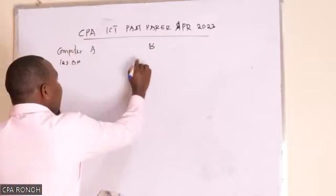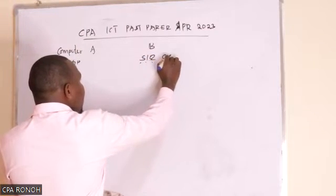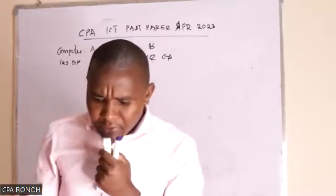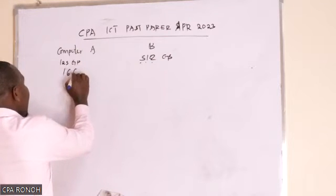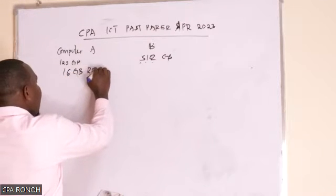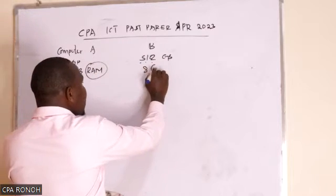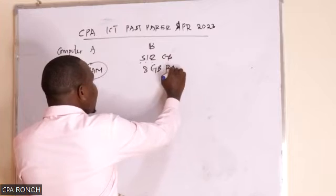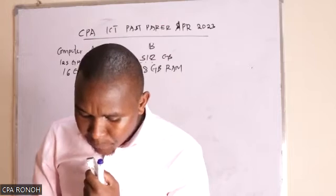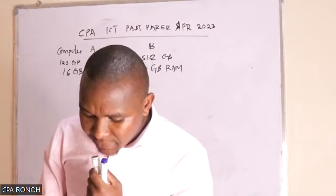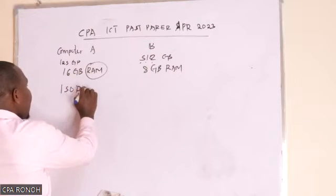Computer B has a 512 GB flash disk. Computer A has 16 GB RAM, and Computer B has 8 GB RAM.